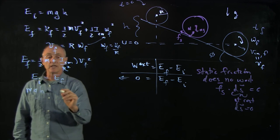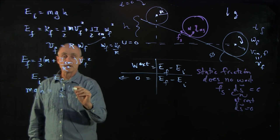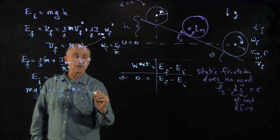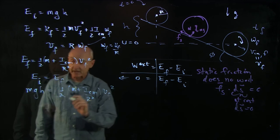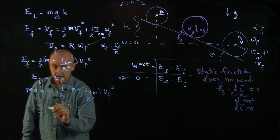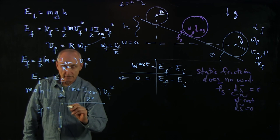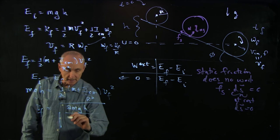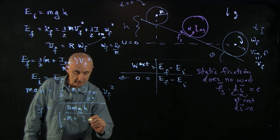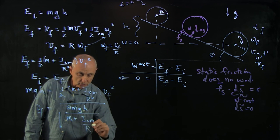So mgh equals 1 half times m plus I cm over r squared v final squared. So we can find that v final is equal to the square root of 2mgh divided by m plus I cm over r squared.